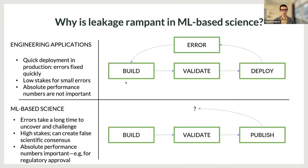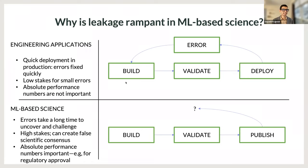Here's a personal anecdote. Before starting my PhD, I worked as a software engineer at Facebook. When people released ML models there, most people knew leakage could be an issue, but they didn't worry too much about it, because even if a model with leakage went into production, you could quickly roll out a fix in a low-stakes setting. Facebook allowed you to move fast and break things. In contrast, ML-based science has no production setting at all, and as we discussed, there is no mechanism for fixing errors once the model has been released.